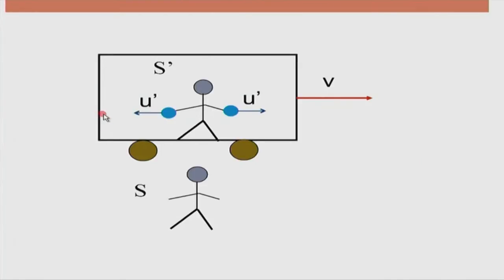Many times when we do special theory of relativity, we realize how clumsy or vague we were in classical mechanics. Special theory of relativity requires very clear-cut thought processes. Event 1 is the first ball reaching the front wall; Event 2 is the second ball reaching the back wall. The question is: are Events 1 and 2 simultaneous? We assume the balls have enough velocity to reach the wall before falling to the ground.